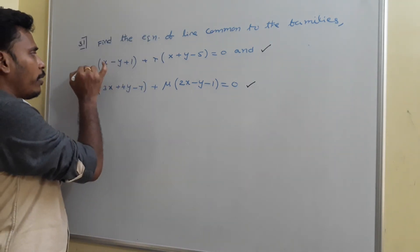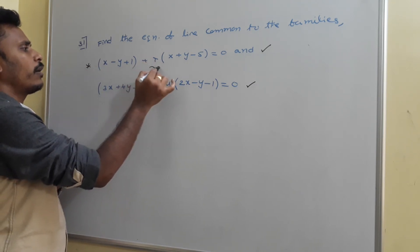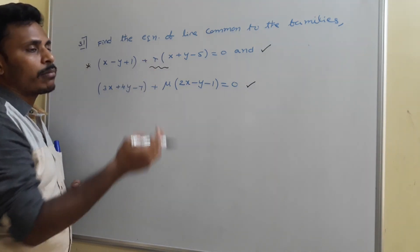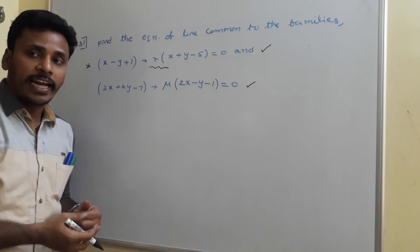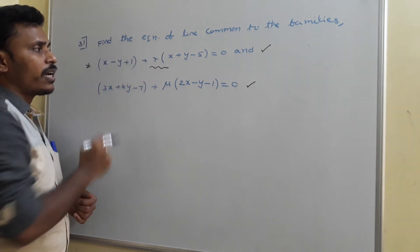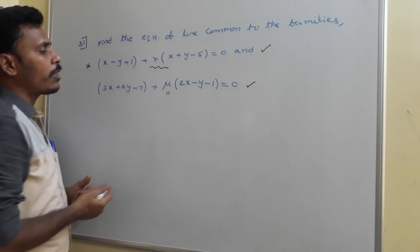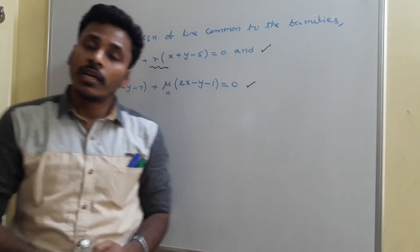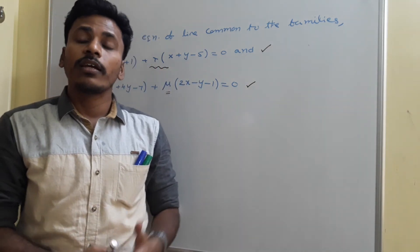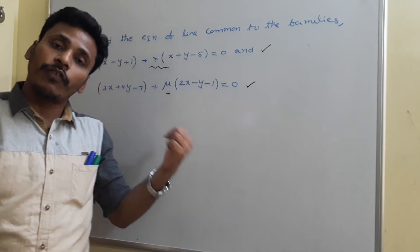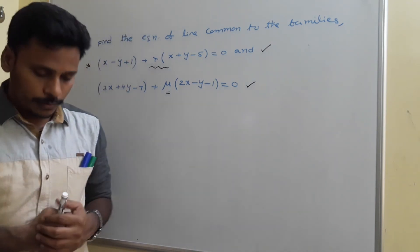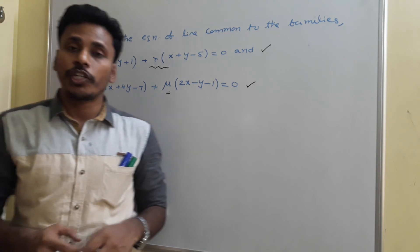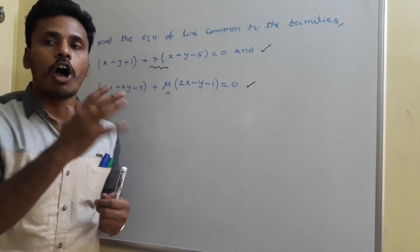There are two families and we need to find a line common to both. In the first family, by placing different values of lambda (a real constant) we get infinite lines. Similarly, by placing different values of mu in the second family we get infinite lines. Maybe there is one line which is in both the first family and the second family — that common line we need to find.